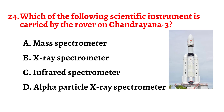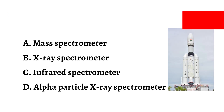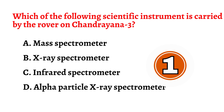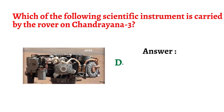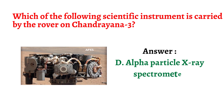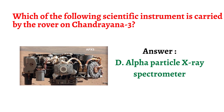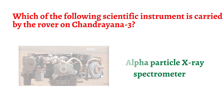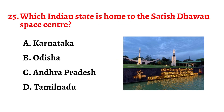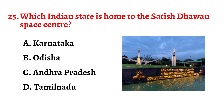Question number twenty-four: Which of the following scientific instruments is carried by the rover on Chandrayaan 3? The correct answer is option D: Alpha Particle X-Ray Spectrometer.